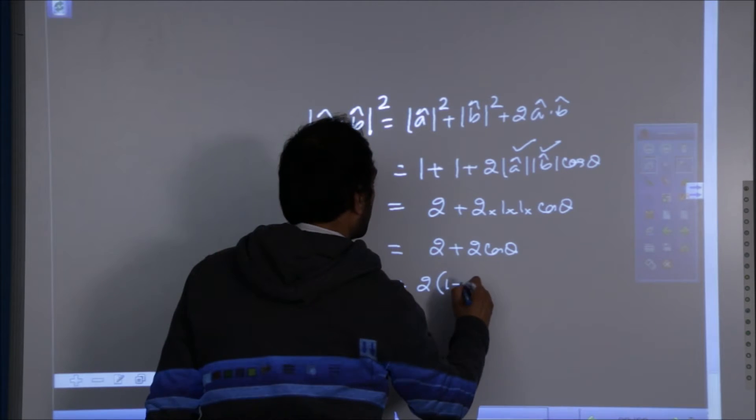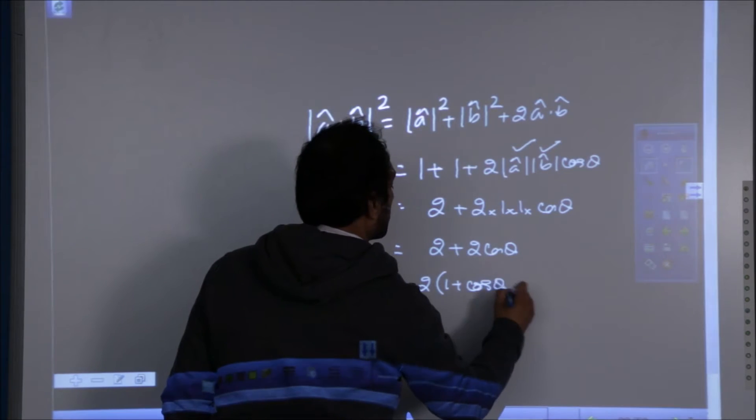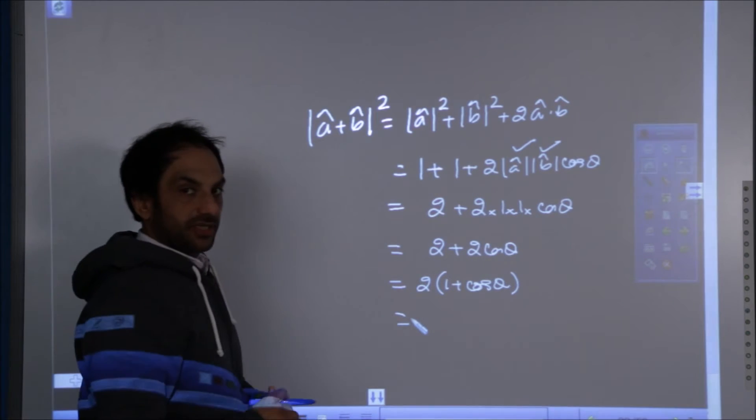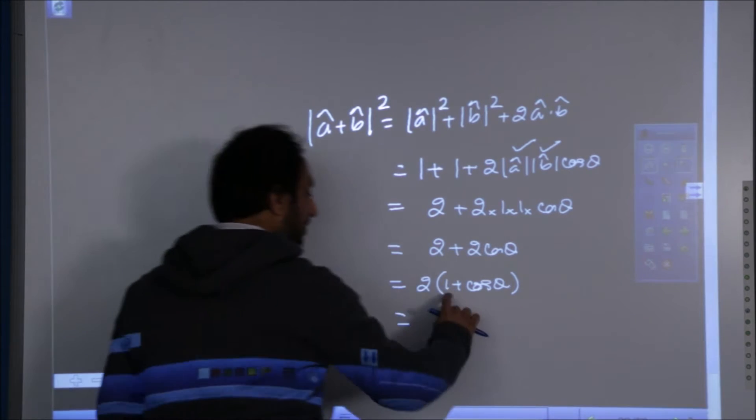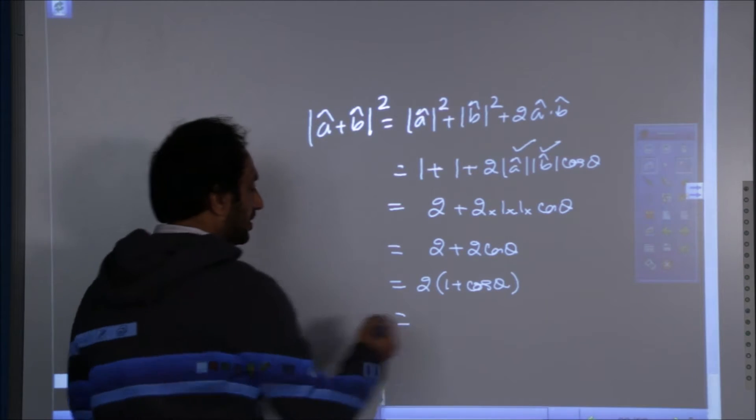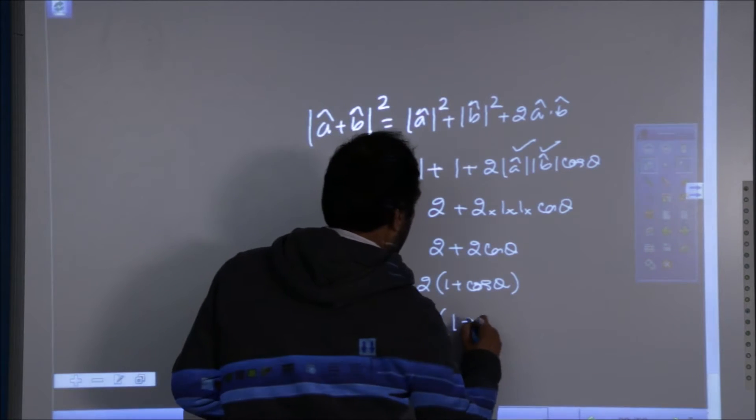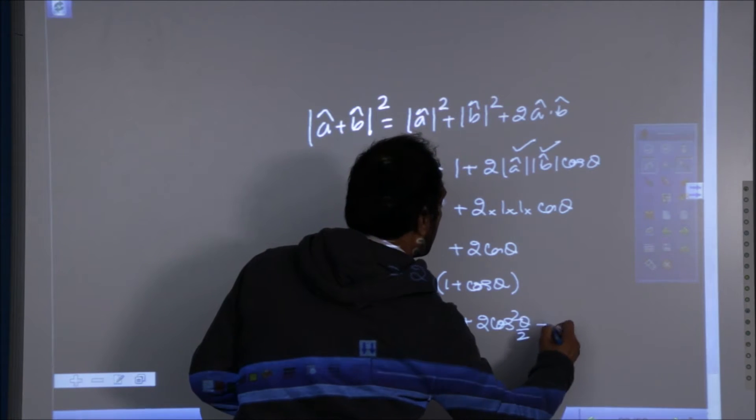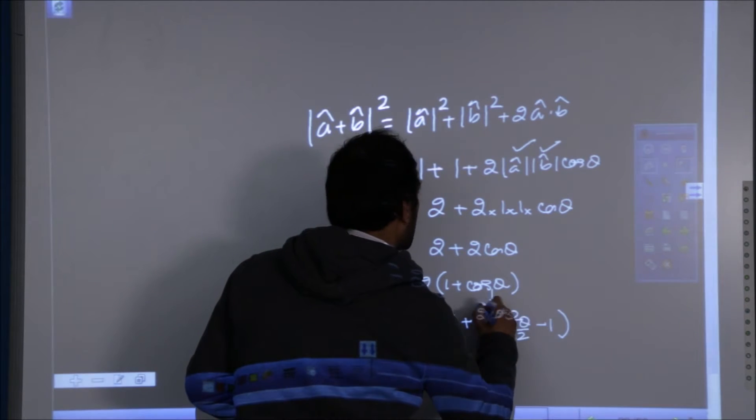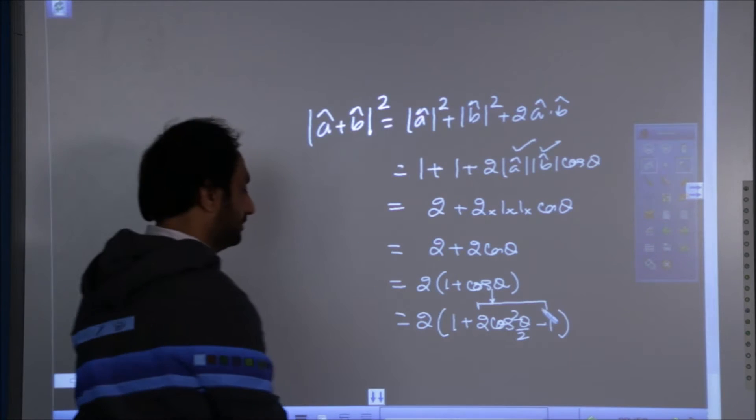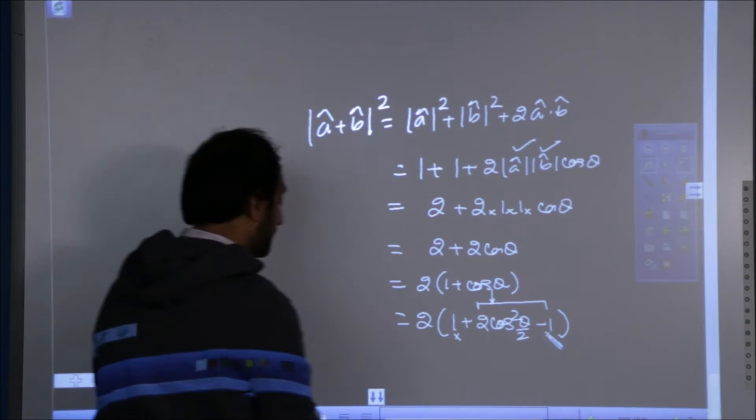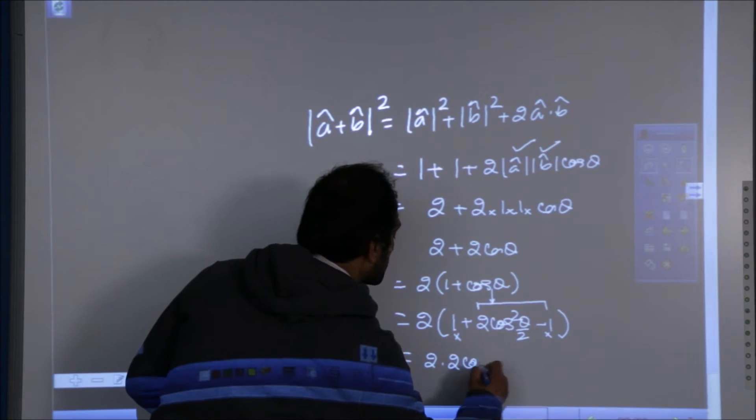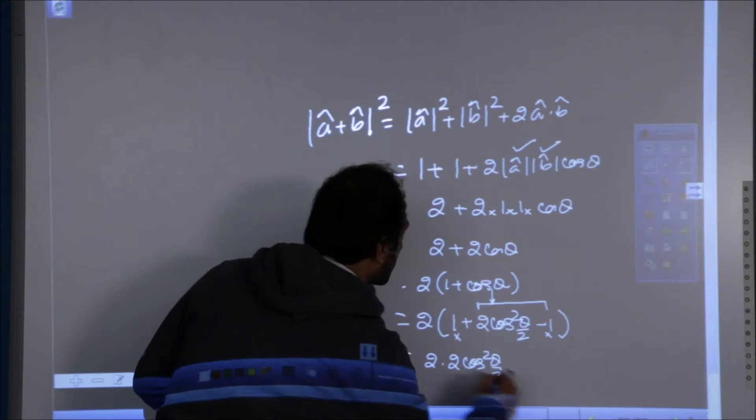2 is common. And you know the basic formula, trigonometry, the half angle formula. What is 1 plus cos theta? This is the formula, half angle formula. Now, 1 and minus 1 is gone and we are left with 2 into 2 cos square theta by 2.